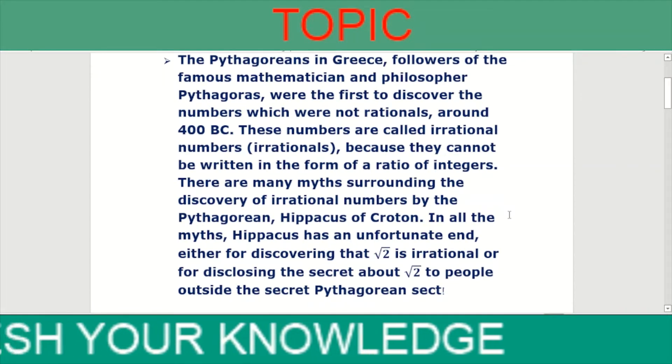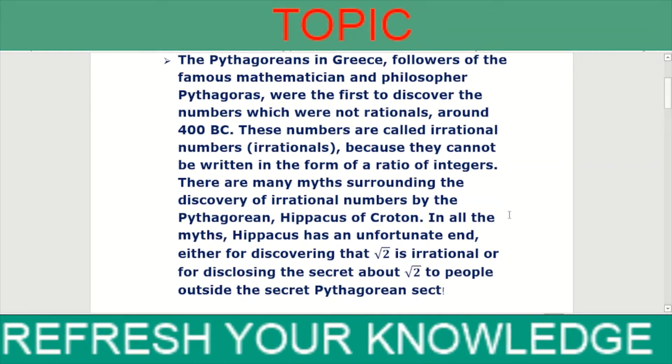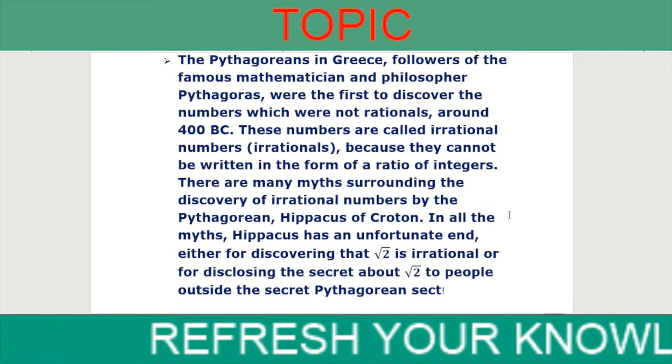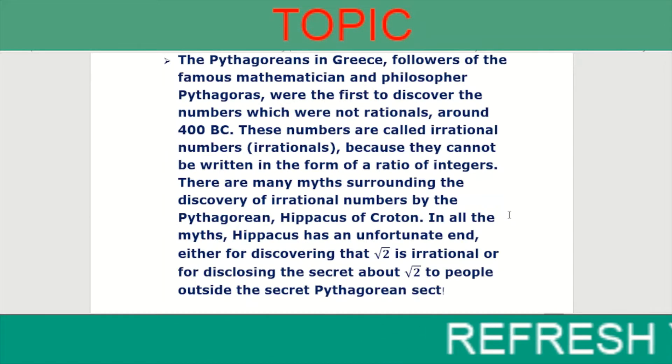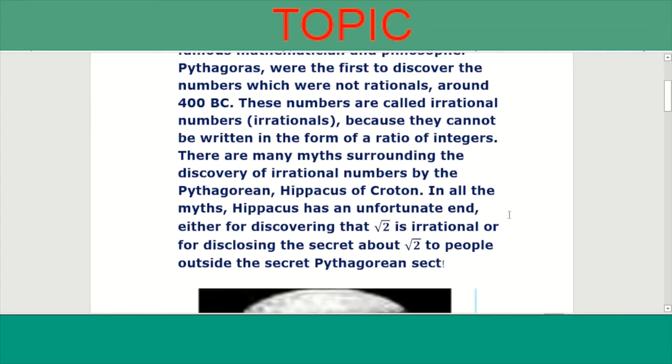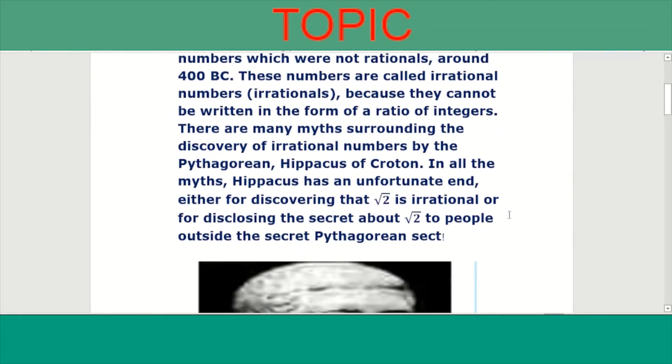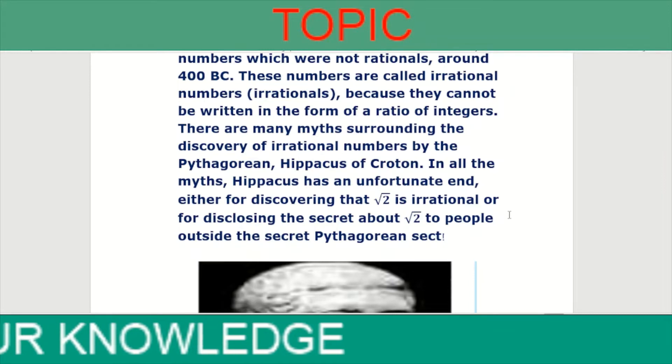In all the myths, Pythagoras has an unfortunate end either for discovering that root 2 is irrational or for disclosing the secret about root 2 to people outside the sacred Pythagorean sect.